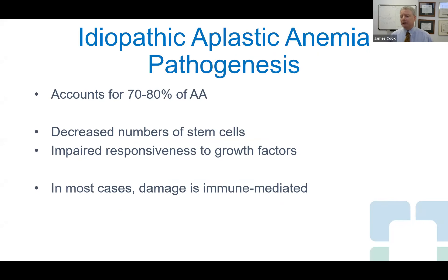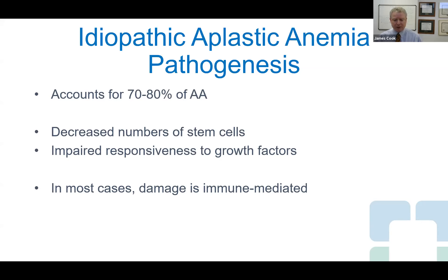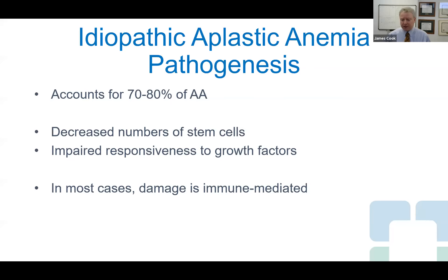Most of the time — 70 to 80% — we can't find any of those causes, and we refer to it as primary or idiopathic aplastic anemia. It's clear that this is a problem of the stem cells in the bone marrow. In aplastic anemia, there are decreased numbers of stem cells, and the ones that are there seem to be abnormal — if you take them and try to culture them in the laboratory, they don't respond to the usual growth factors. In the vast majority of cases, we think this is basically an autoimmune-mediated process.